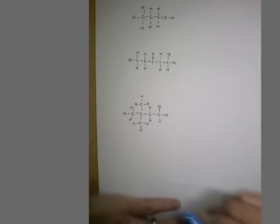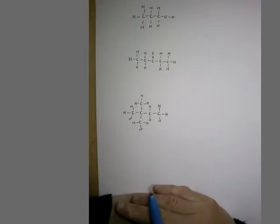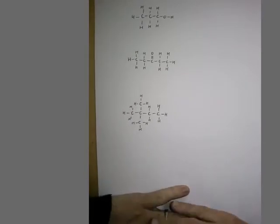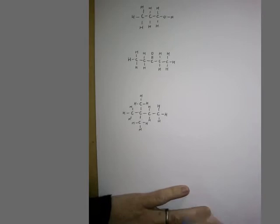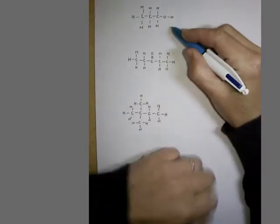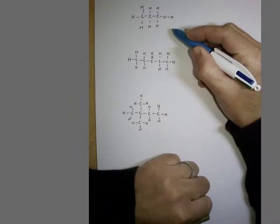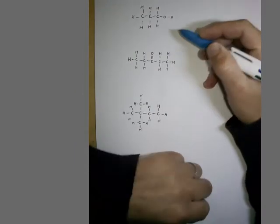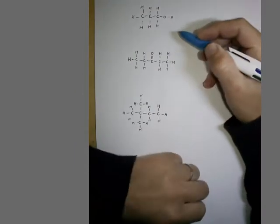In this video, I'm going to explain how you can work out the number of hydrogen environments in an organic molecule, in order to help you with your interpretation of proton NMR spectra. We're going to start with propan-1-ol, which has eight hydrogens, and I'm going to use this molecule to illustrate what we mean by hydrogen environments.